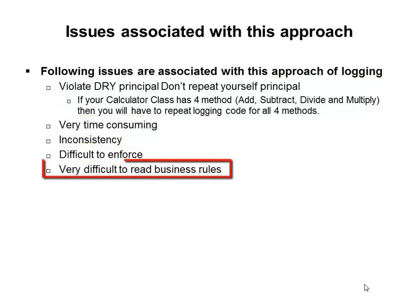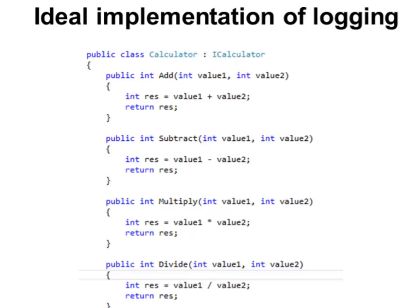It is very difficult to read business rules when logging details are mixed in. When a developer is working on any method, they should not be concerned about the logging details — 100% of the focus should be on implementing the business rules. The following methods are very clean and easy to understand; there are no logging details in them, yet when executed they will generate the same logging output as the previous examples.